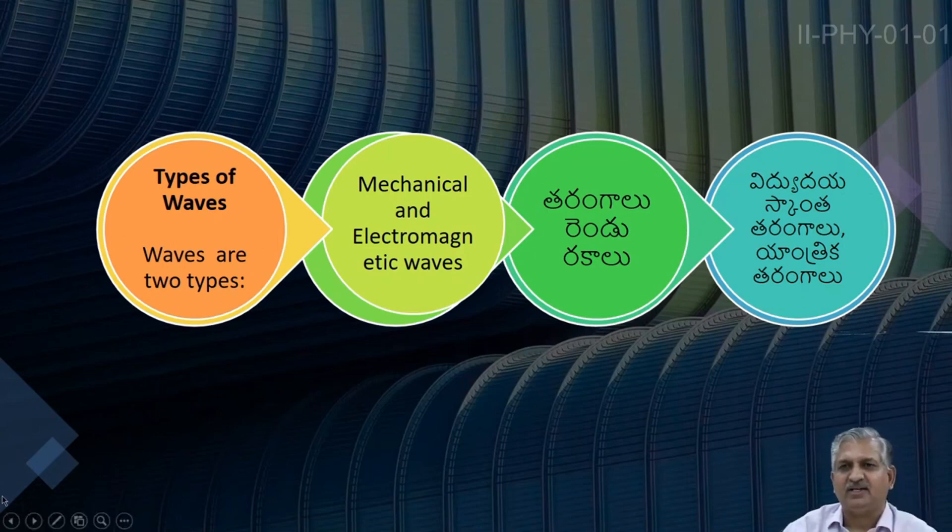We have two types of waves. One is called mechanical wave, another is called electromagnetic wave.